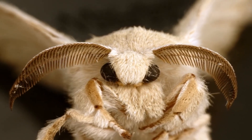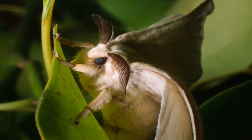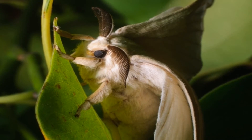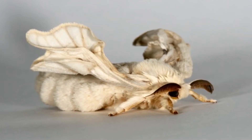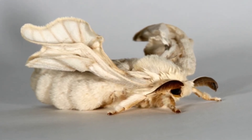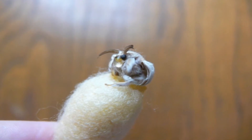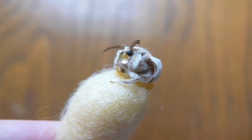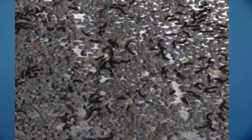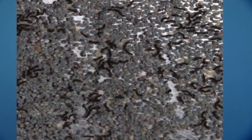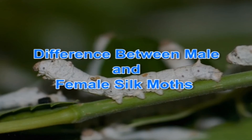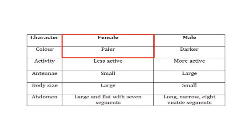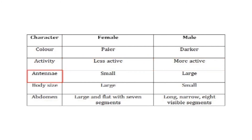Male and female adults can be distinguished morphologically. The female adult has comparatively smaller antennae; its body and abdomen are fatter, larger, and it is generally less active than the male moth. At the caudal end, the male moth has a pair of hooks known as harps, whereas the female moth has a knob-like projection with sensory hairs. The female moth is paler but the male moth is darker. Female antennae are small and male antennae are larger.